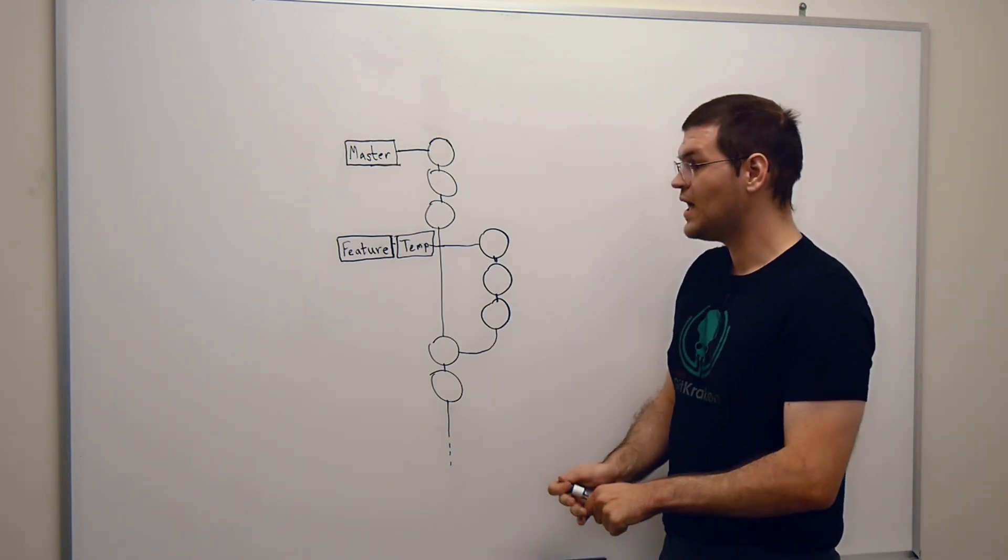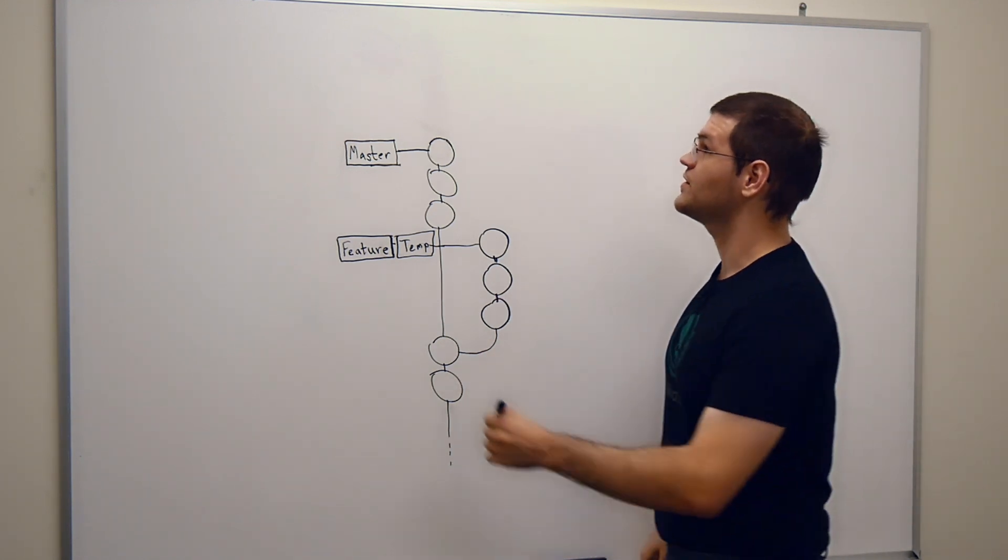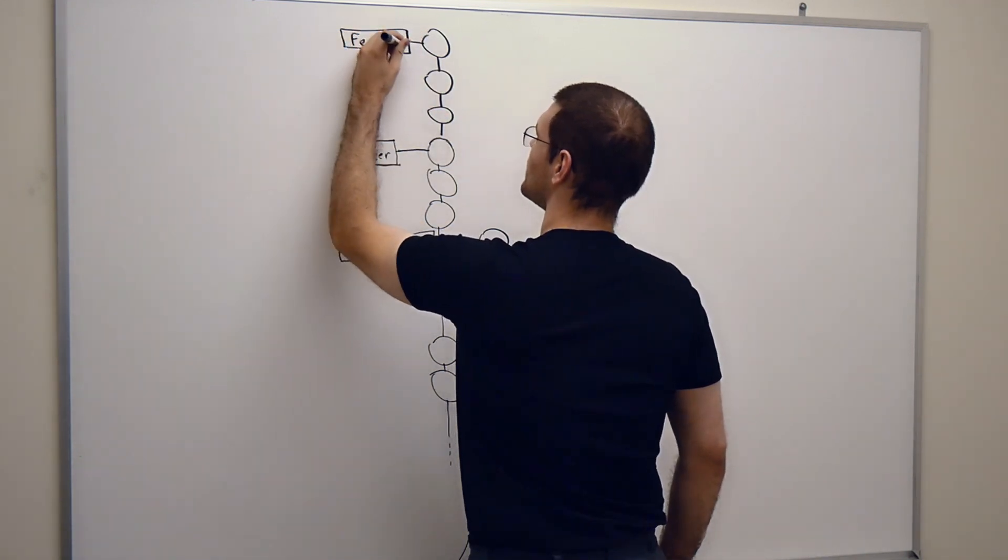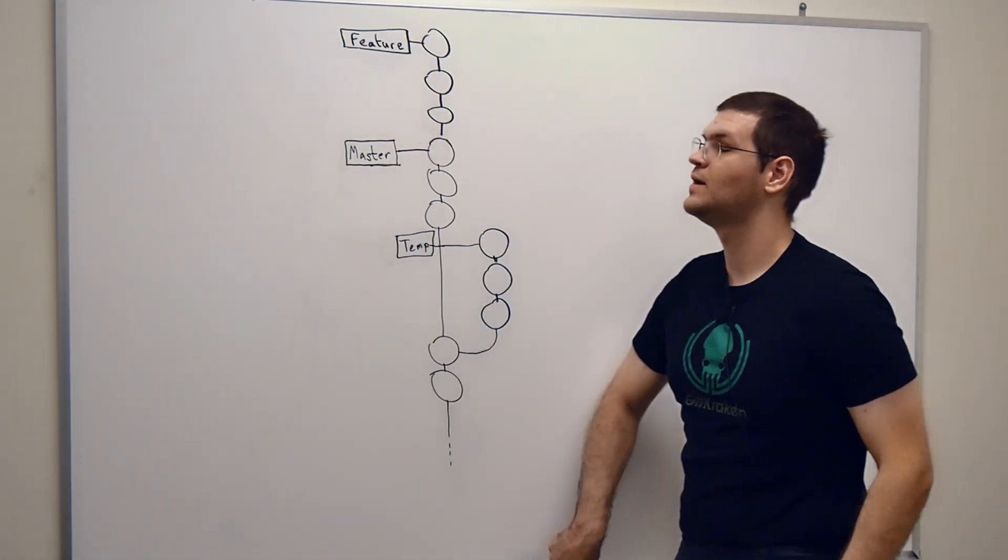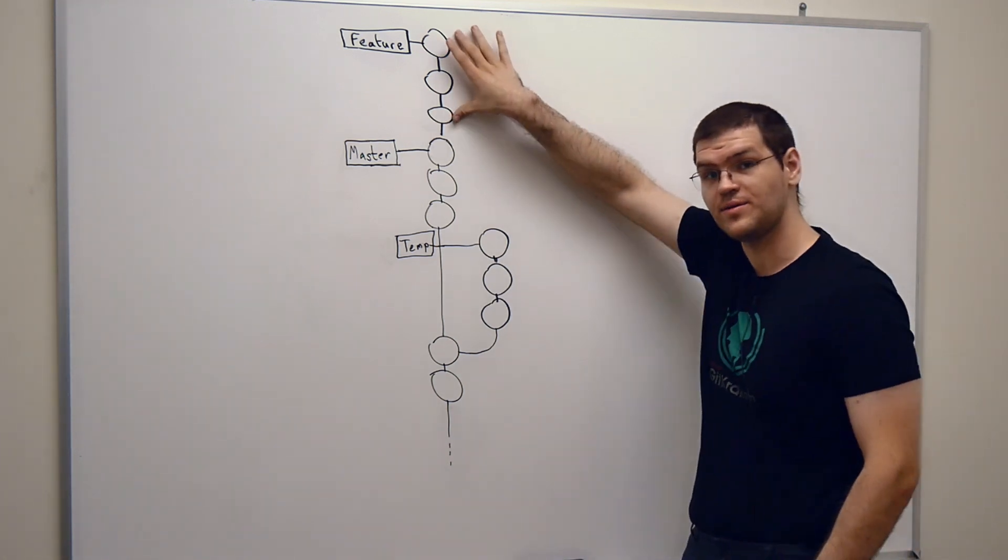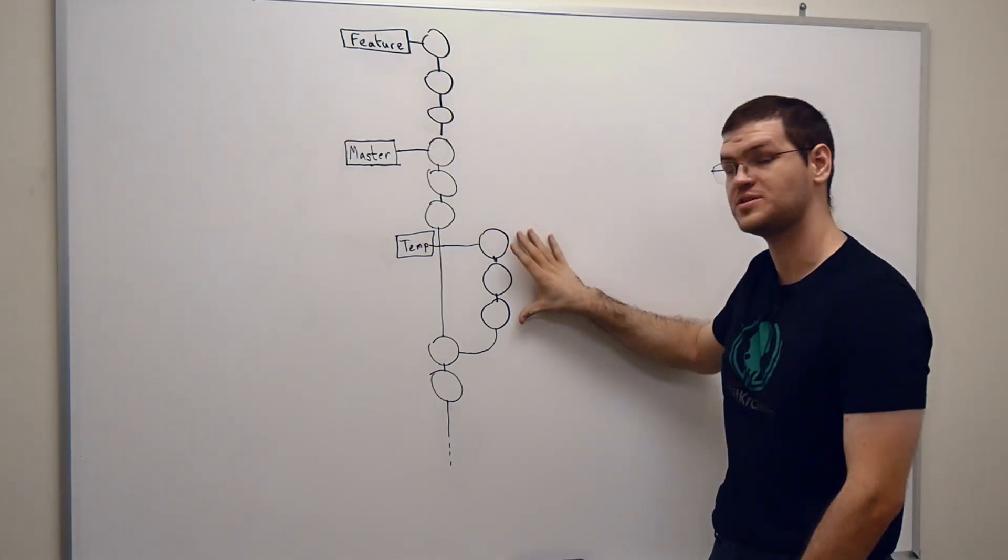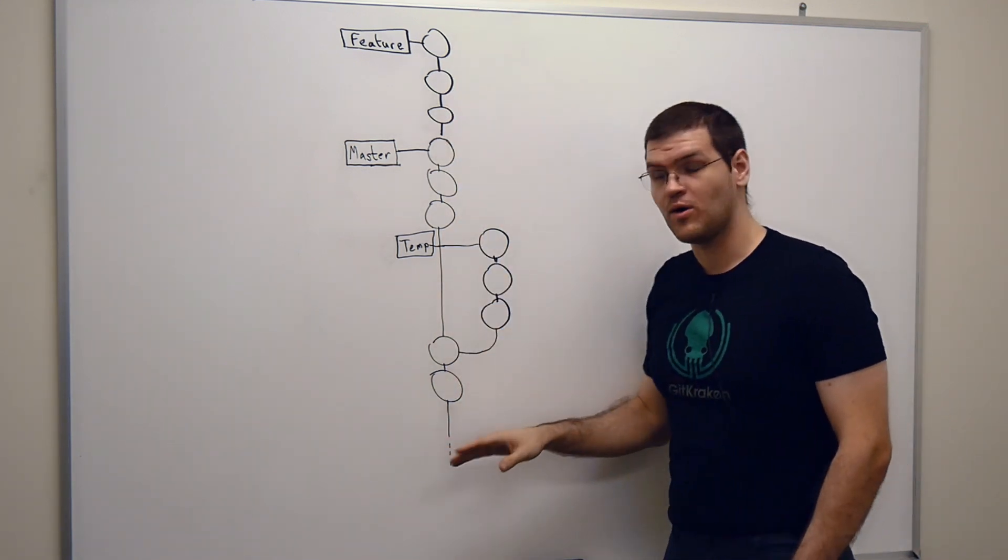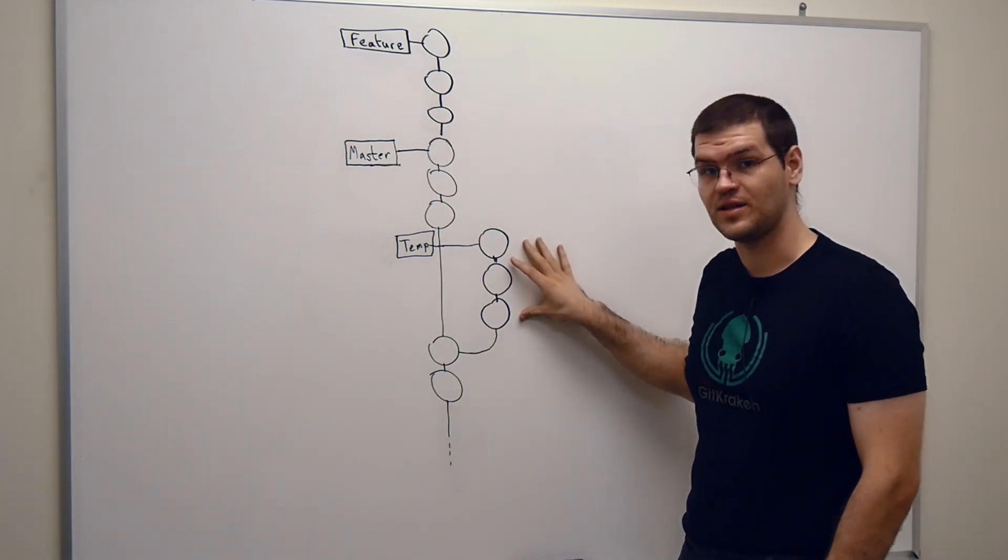Let's say I do my rebase, everything works out fine. Now I've got feature on top of master and these three commits are exactly the same changes as these. Feature looks exactly the way I want it. Now I don't need these commits anymore.